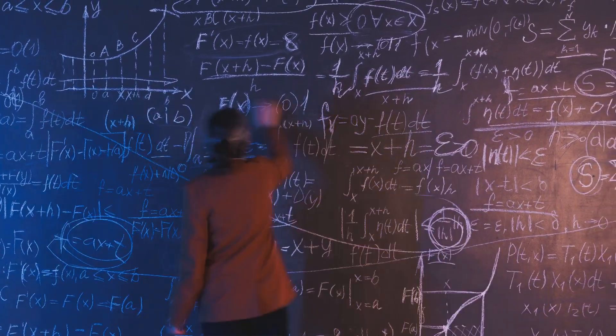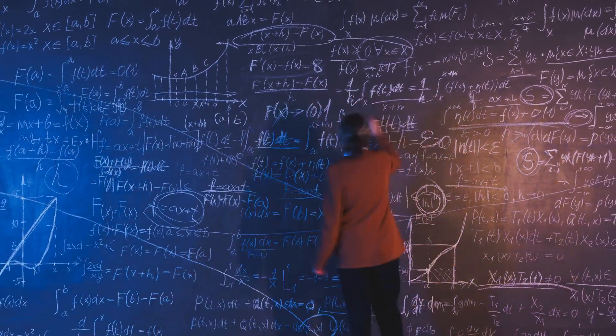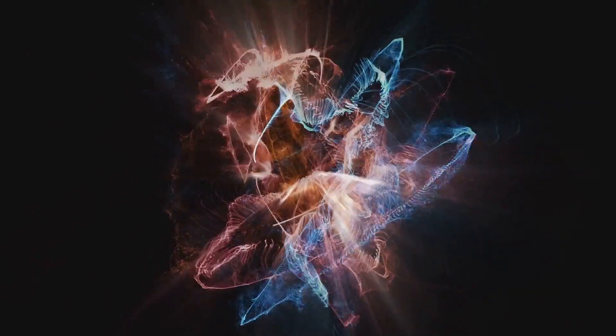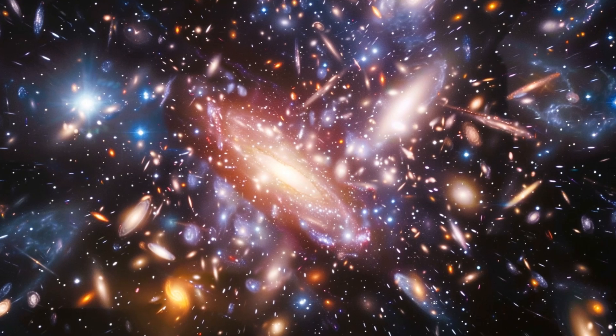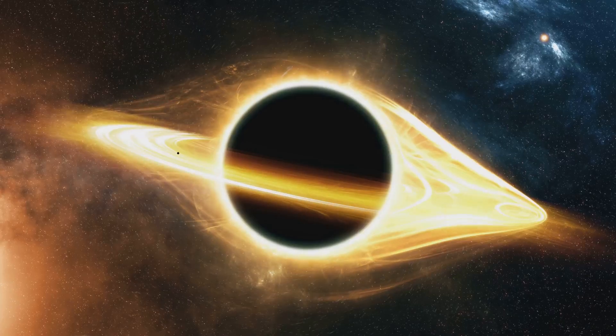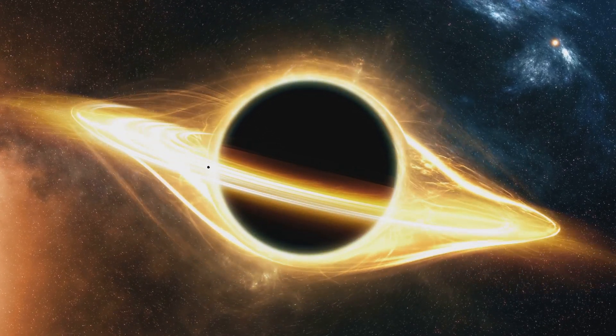Our understanding of the Universe rests on two pillars: quantum mechanics and Einstein's general relativity. Quantum mechanics governs the microscopic world of atoms and particles, revealing a reality governed by probabilities and wave functions, where particles can exist in multiple states simultaneously. General relativity, on the other hand, describes the macroscopic universe of stars, galaxies, and gravity itself, painting a picture of smooth, curved spacetime warped by massive objects.